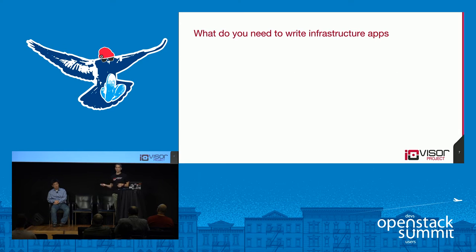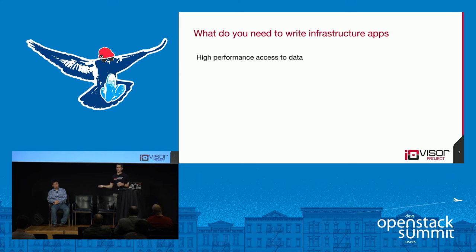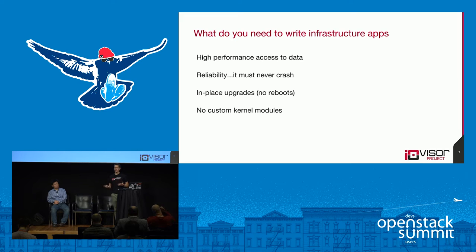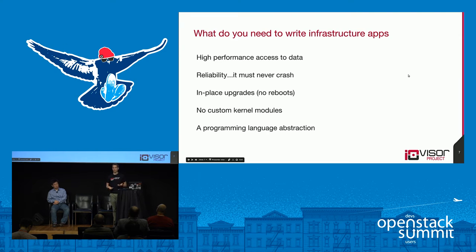Applying that analogy to infrastructure applications, you have a different set of restrictions and goals. You want high-performance access to data — that's why a lot of things are in-kernel or in user-space frameworks. It has to be reliable; you're building applications for high uptime, so it can't crash and it can't only work some of the time. Even your development model needs to avoid having to reboot your server. And you don't want to muck around with your kernel — you should be able to write as if it's a normal application, while still having access to data and a programming language abstraction.